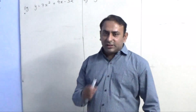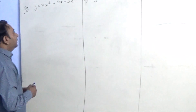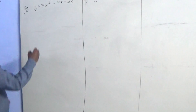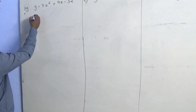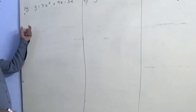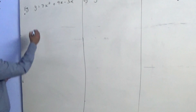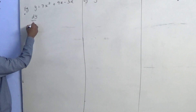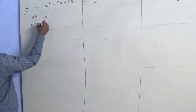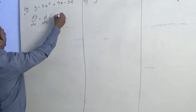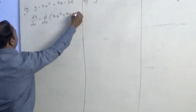Now we continue with some more sums of differentiation. This is a simple sum. We will find the derivative by applying d by dx to both sides. So it will be dy by dx equals to d by dx of 7x square plus 9x minus 32.